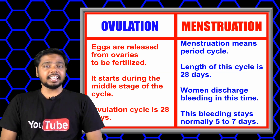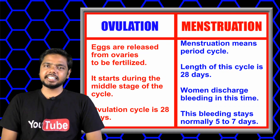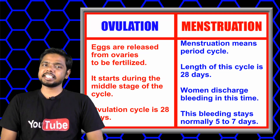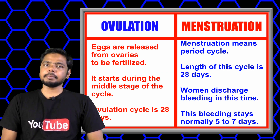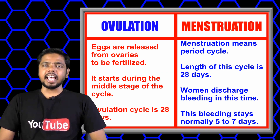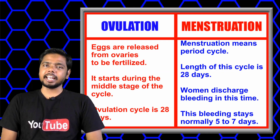Menstruation means the period cycle. The length of the cycle is 28 days, but it can also be 27, 29, or 30 days. Women experience bleeding during their period, and this bleeding normally lasts 5 to 7 days.